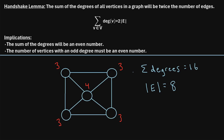One useful application of the handshake lemma is as a check: if you calculate the degree of each vertex in a graph and take the sum of all those degrees and come up with an odd number, you know you must have made a mistake, because the sum of all the degrees must be an even number. The handshake lemma offers a nice way to double-check that you calculated the correct degrees in a graph.